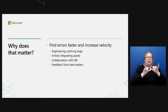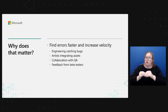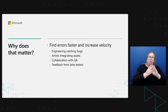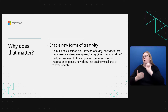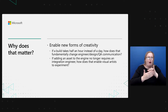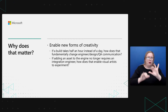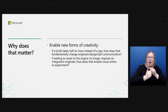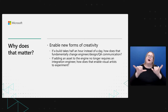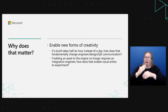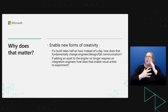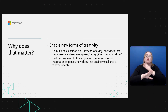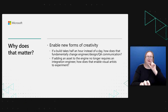Engineers can catch bugs more quickly. Artists can integrate assets more quickly. That collaboration loop with QA and beta testers can get much tighter. But it's even more than that. If a build used to take a day and now takes an hour, or used to take an hour and now takes five minutes, how does that fundamentally change the way your engineering team works, or how it works with the design team, or how the QA loop works? A really common use case is automating the process of adding art assets to your engine. This is about improving your craft as a creative endeavor, not just optimizing the build system.